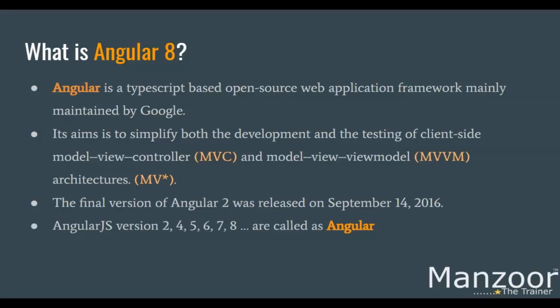All the versions of Angular 1 — 1.0, 1.2, 1.3 — were called AngularJS. From Angular 2 onwards, it was renamed to simply Angular. So whenever I say AngularJS, I am referring to version 1. Whenever I say Angular or Angular 2, I am referring to Angular 2 plus.